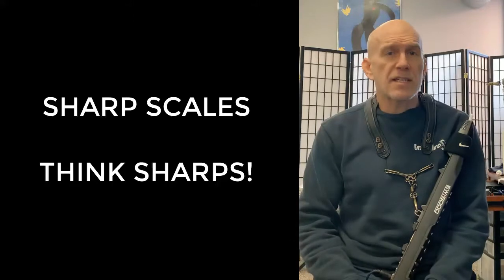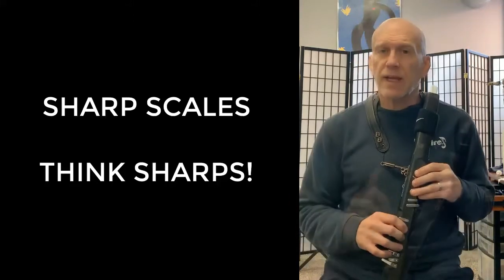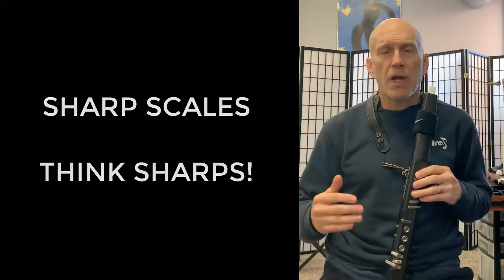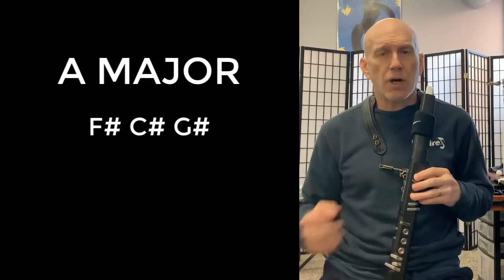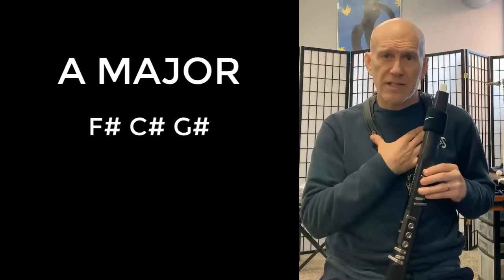So let's do the A scale first. It has a C sharp, an F sharp, and a G sharp. And the new note to us is the G sharp.